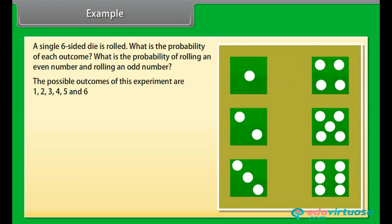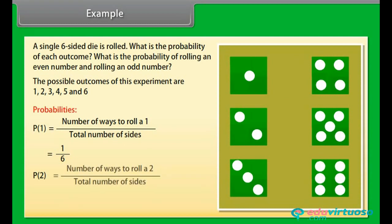Now let's find probabilities. Probability of 1 is number of ways to roll a 1 by total number of sides, is equal to 1 by 6. Probability of 2 is number of ways to roll a 2 by total number of sides, is equal to 1 by 6. Similarly, the probability of 3 is number of ways to roll a 3 by total number of sides, is equal to 1 by 6.